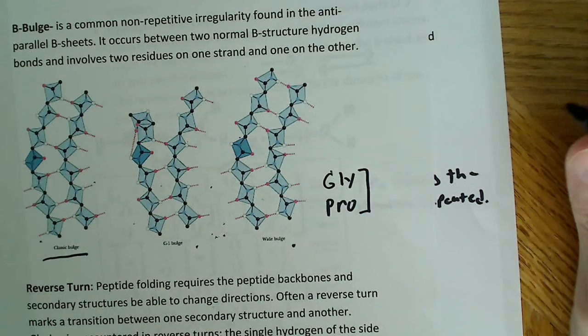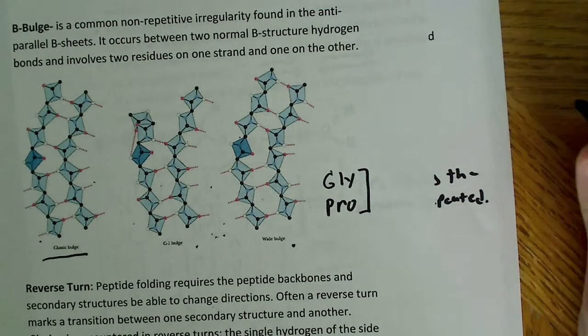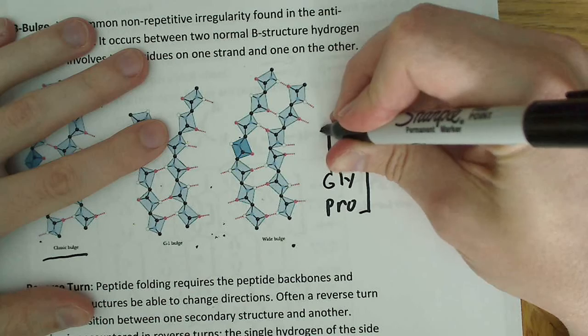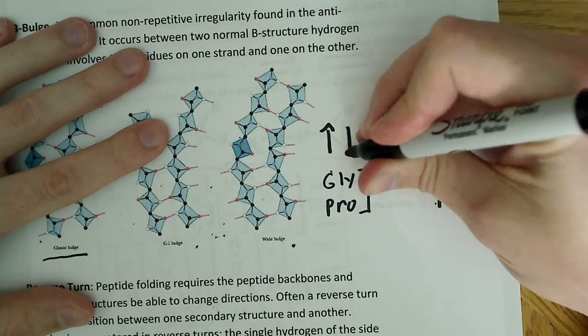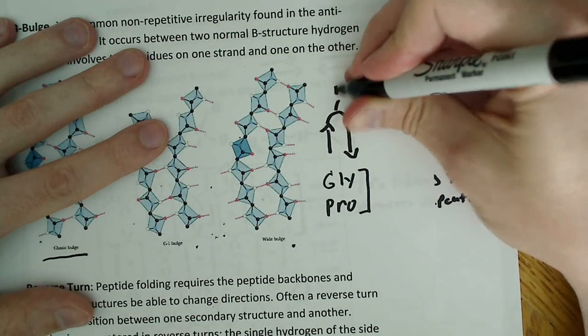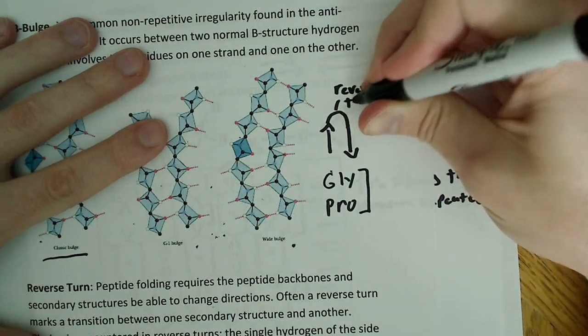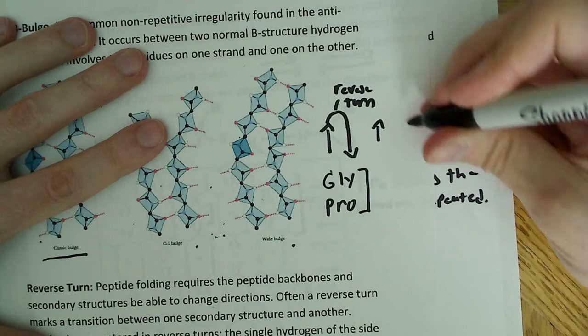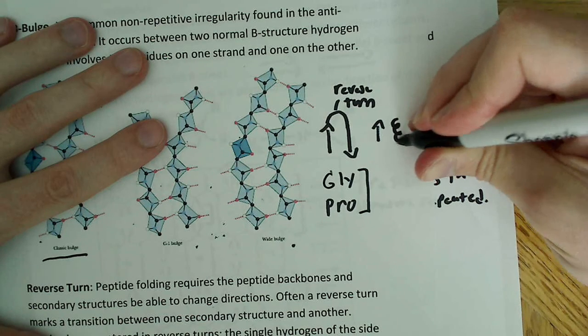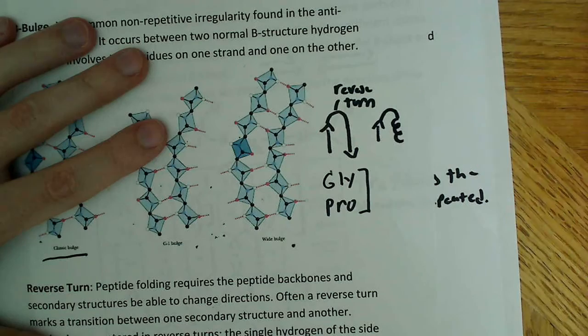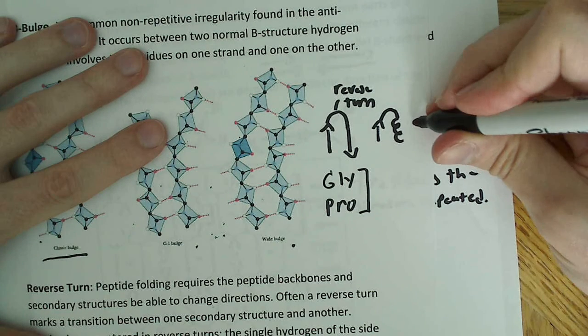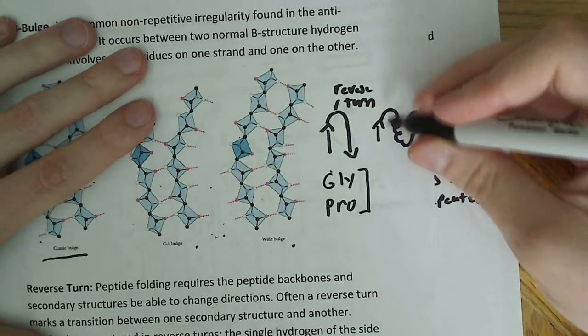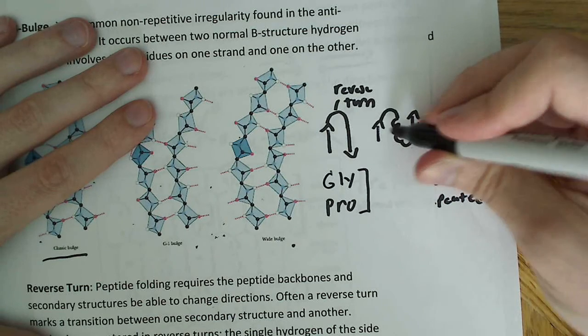If I were asked to draw these really quick, I would maybe say something like this. Here's my beta sheet, my anti-parallel beta sheet. This would be my reverse turn. You could do the same thing with something like this. Then we'll draw an alpha helix. We'll have a reverse turn connecting here. Maybe we'll have something else over here, another beta sheet. These reverse turns would connect the helix to each one of these beta sheets.